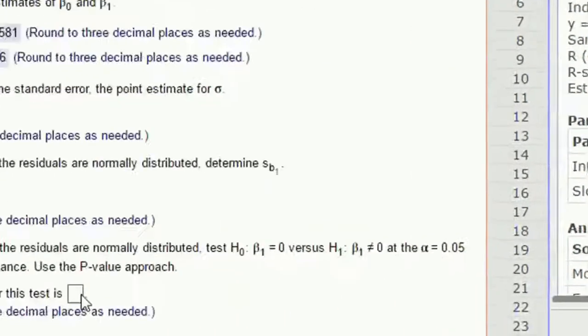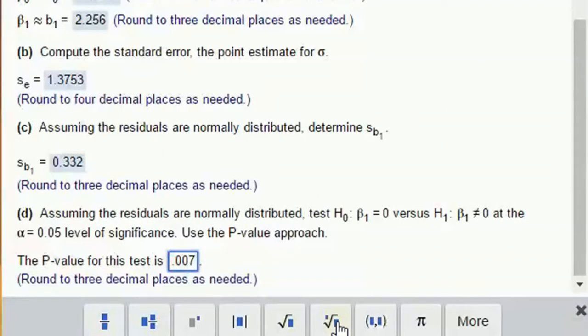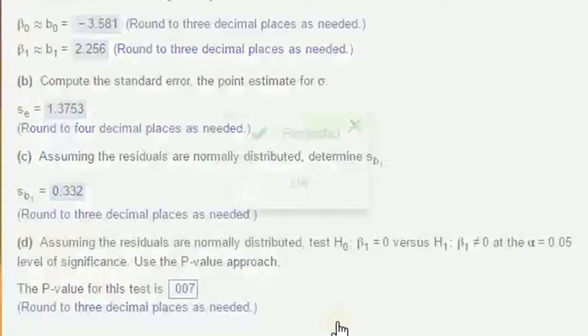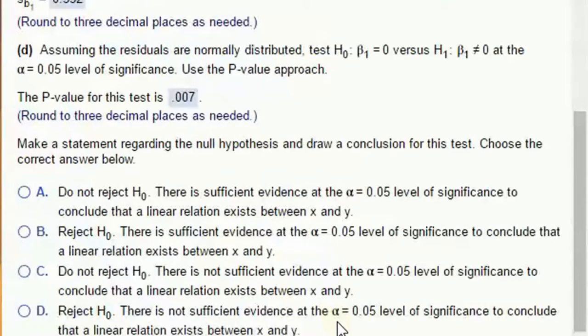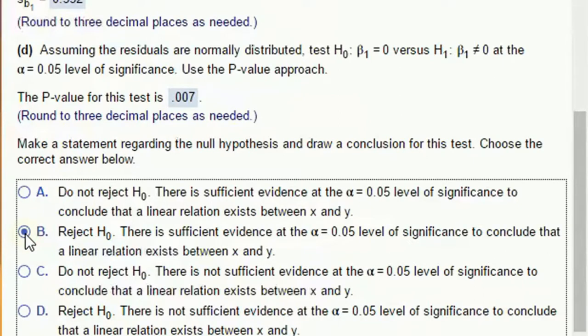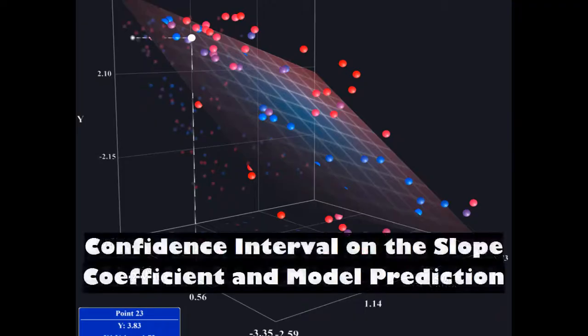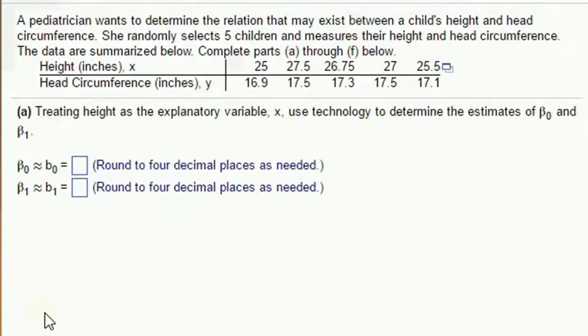And so that p value for the test is right here. Three decimal places is very easy, 0.007. So what would that p value mean? That's a really low p value. It's less than 0.05. It's less than almost anything. It's very, very, very small. We would reject the null hypothesis. There is sufficient evidence to conclude that a linear relationship does exist. That's what rejecting the null hypothesis means for linear regression. We're rejecting the hypothesis that there is no linear relationship.